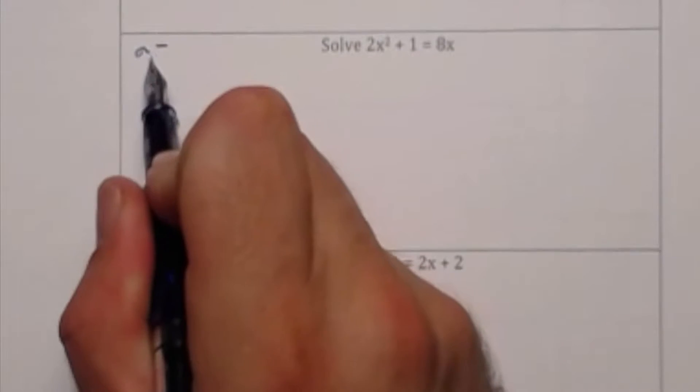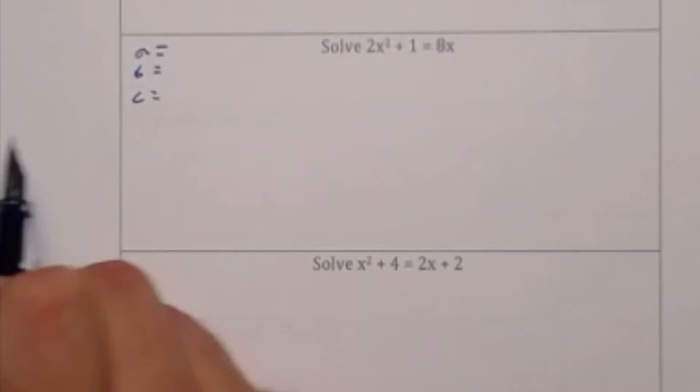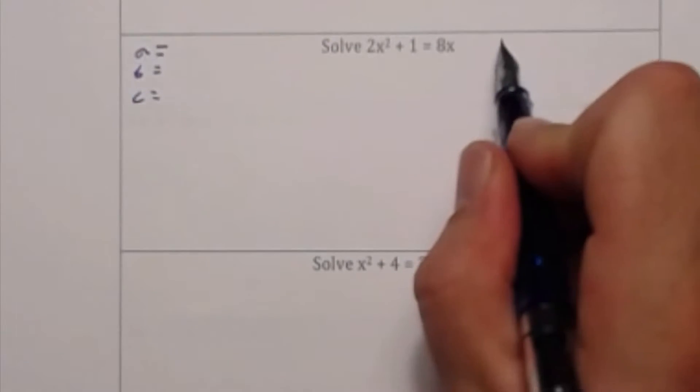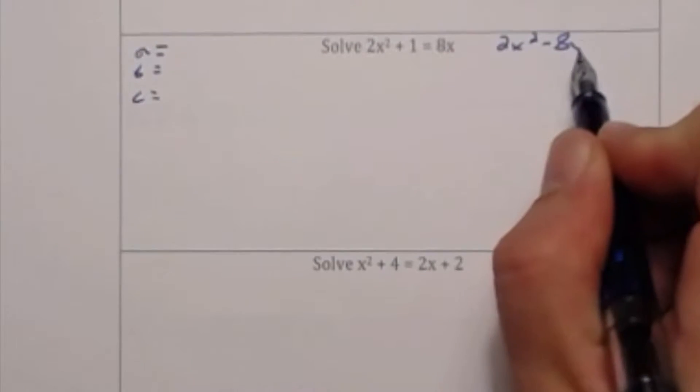Let's use this equation to solve 2x squared plus 1 is equal to 8x. I want to identify my a, b, and c which means writing my polynomial in standard form.